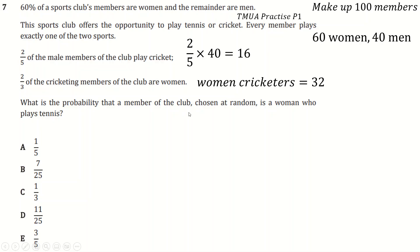And what's the probability the member, because I've chosen a woman who plays tennis. There are 60 women, 32 of them are cricket. You play one or the other, so that means there are 28 tennis players, and then 100 members, so 28 over 100 simplifies to this. So again, making up a number really helpful there.